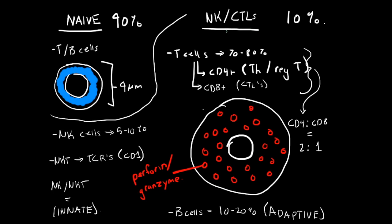Next, you have the large granular lymphocytes, which are the natural killer cells and the cytotoxic T lymphocytes, which make up about 10 percent. Together, they're larger and have a more abundant cytoplasm. As you can see here, the cytoplasm is now bigger than the nucleus.